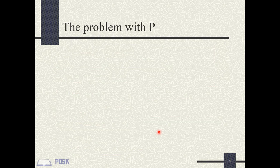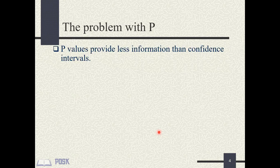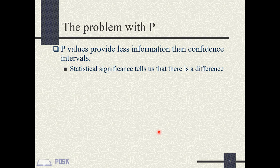Many of us are familiar with the p-value. It is the time-honored statistic for testing the null hypothesis. However, with time we have come to realize that the p-value has some shortcomings. For example, we know that the p-value is not as informative as the confidence interval. P-value tells a story, but it doesn't tell the whole story.